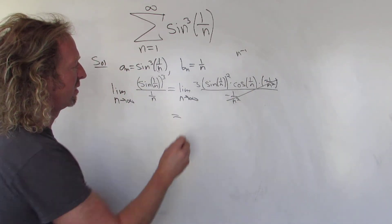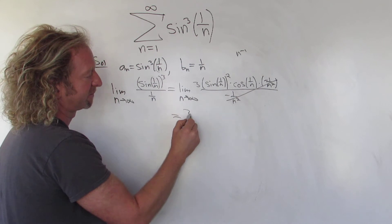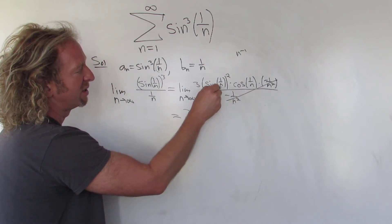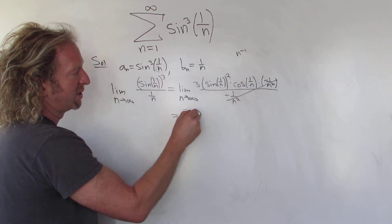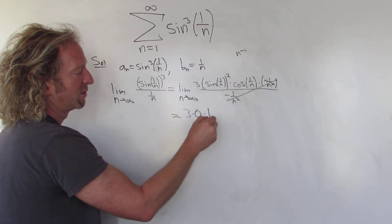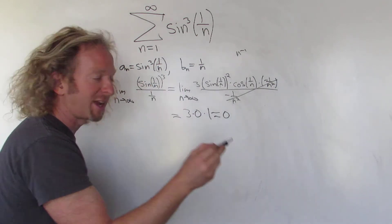So now when we take the limit, we just take it, right? This would be 3. Sine of 0 is 0. So you get 0 squared, so you get 0. Cosine of 0 is 1. So you just get 0, which is finite and positive.